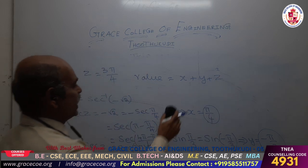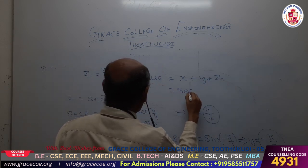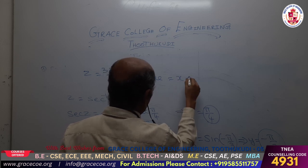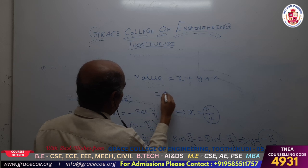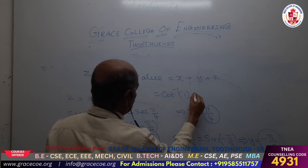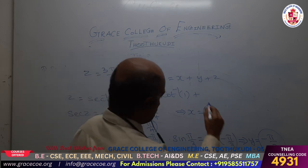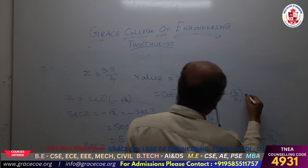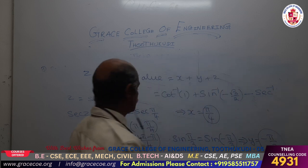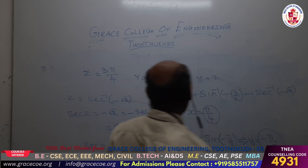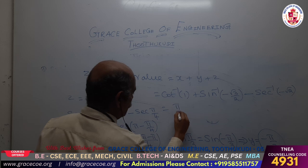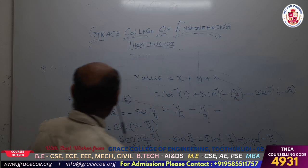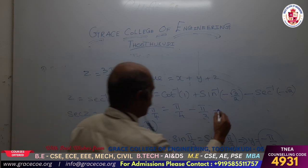The three values are: cot inverse of 1 plus sin inverse of minus root 3 by 2 minus secant inverse of minus root 2. The first value x is pi by 4, the second value y is minus pi by 3, and the third value z is 3 pi by 4. So we compute pi by 4 minus pi by 3 plus 3 pi by 4, which gives 3 pi by 4 minus pi by 3 plus pi by 4.